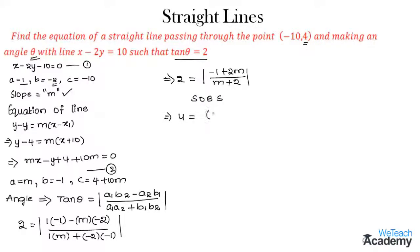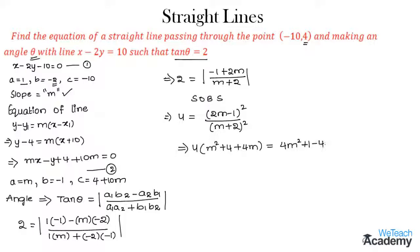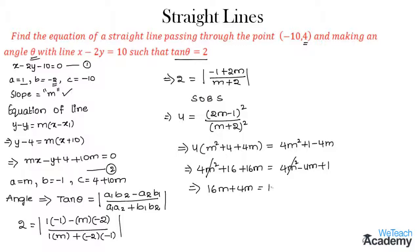Squaring both sides: 4 equals (2m minus 1) squared divided by (m plus 2) squared. Expanding: 4m² plus 16 plus 16m equals 4m² minus 4m plus 1. The 4m² terms cancel, giving 16m plus 4m equals 1 minus 16, so 20m equals minus 15, and m equals minus 15/20 equals minus 3/4.